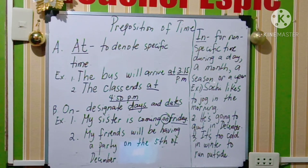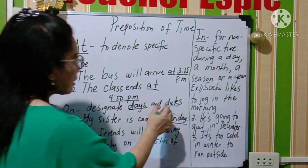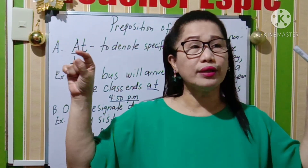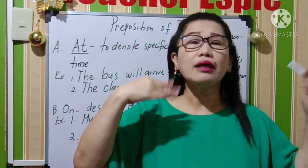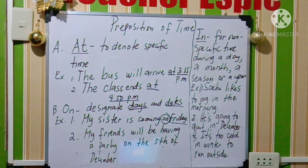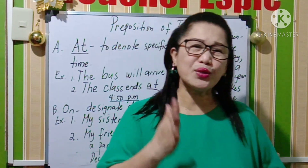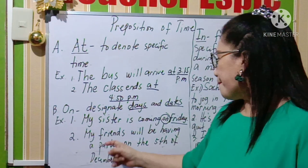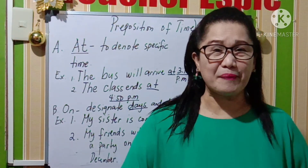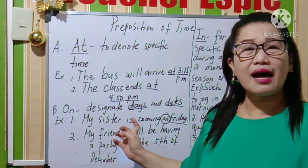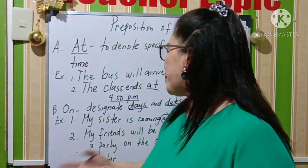And then for example number two, my friends will be having a party on the 5th of December. Ano po yung 5th of December? Ito naman po ang nagde-designate ng dates. So dates po natin — December 1, December 2, and so on — meron po tayong month, meron po tayong kung anong araw, kung anong number. My friends will be having a party on the 5th of December. Or pwede rin gumamit ng on December 5th. Ano po yung kaibahan ng December 5th at saka 5th of December? Here in the Philippines, we are used to — my sisters will be having a party on December 5th. But in other countries, they are using 5th of December — nauna po yung day kesa sa month, so 5th of December like that. So yun po yung paggamit guys ng on.